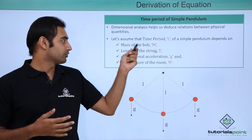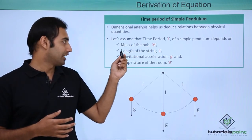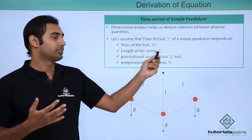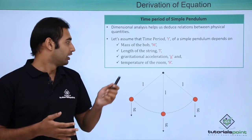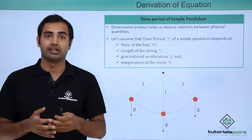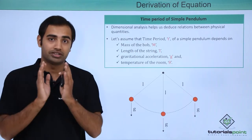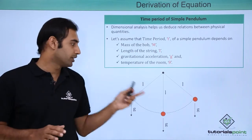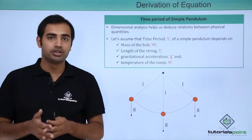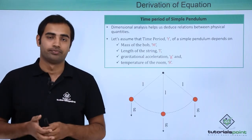The first one is the mass of the bob m, next is the length of the string l, next is the gravitational acceleration g which is simply an acceleration, and temperature of the room theta. So if the temperature is more or less, based on that, the time period of the pendulum is being affected — we are assuming. As a student, you can also assume more dependencies at your will.